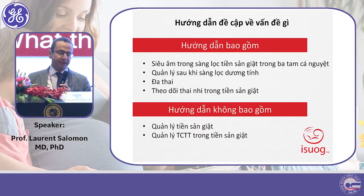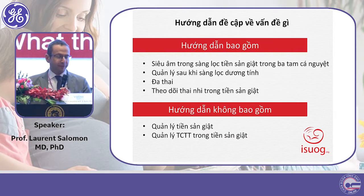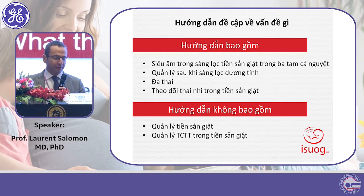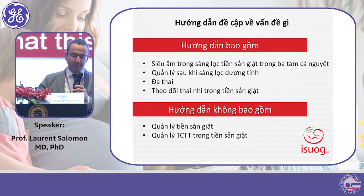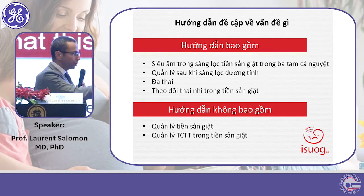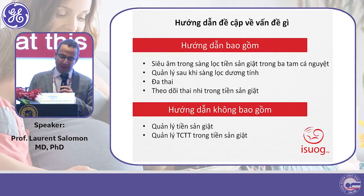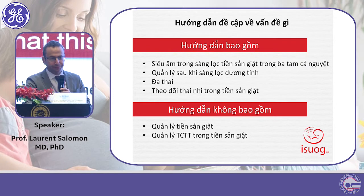The guidelines cover screening in the three trimesters, management after positive screening, the case of multiple pregnancy, and the follow-up of fetuses in established preeclampsia. However, we do not cover management of preeclampsia or management of growth restriction associated with preeclampsia.